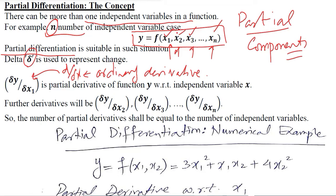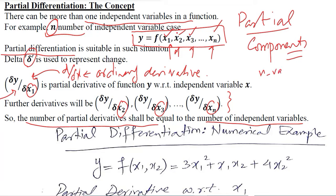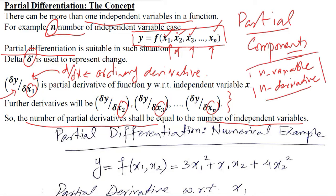This is the number of derivatives that we can calculate from the given general function. The first derivative would be with respect to the first independent variable, the second with respect to the second, and so on, similarly for the third and finally the last independent variable. A key finding I can generalize here is that the number of partial derivatives is equal to the number of independent variables. I had n variables and I have n derivatives — so this is a pattern that will exist in partial derivatives.